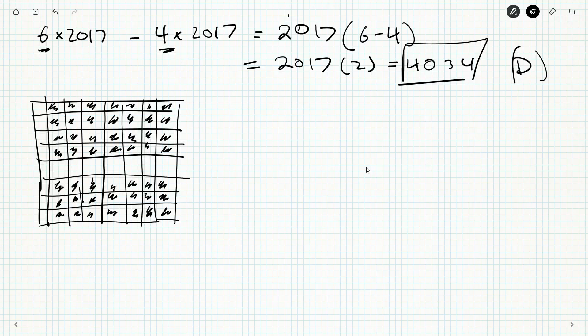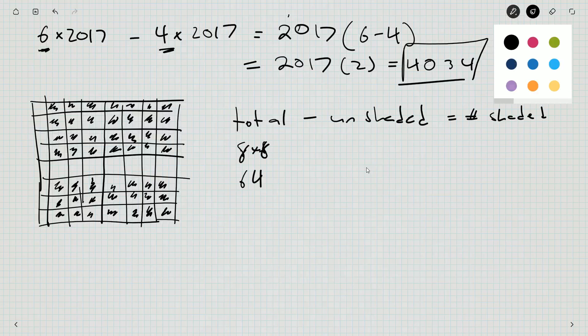Okay, so one thing I could do is say the total minus the unshaded is equal to the number of shaded ones. Well the total, it's 8x8, so this is going to be 64. Unshaded ones, well you can count them by hand.